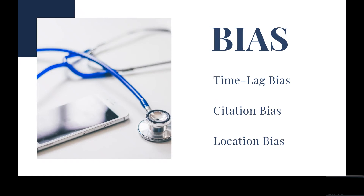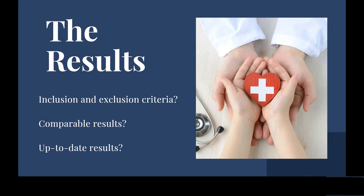With some of these biases you may have to bring in your own knowledge or discuss with colleagues — for example, you may be aware of papers which should have been included. Finally, it's important to check that they have included a clear inclusion and exclusion criteria for their results, along with the reasons as to why they've made these decisions. Do you agree with their criteria? Have they included the right results to answer the research question?